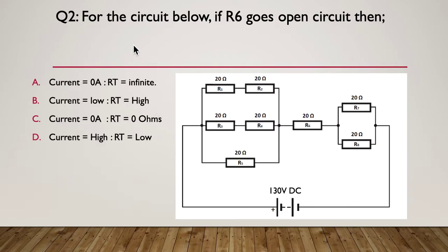Question two: for the circuit below, if R6 goes open circuit, which answer is correct? A — the current would go to zero amps and R total will be infinite. B — the current will go low and R total will go high. C — the current will go to zero amps and R total will go to zero ohms. Or D — the current will go high and R total will go low. Pause here if you need to.